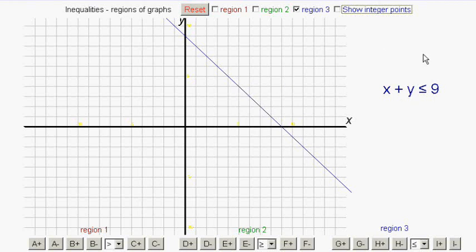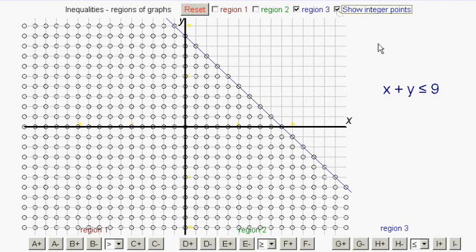I think the simplest one to choose is 0, 0. Now, 0 plus 0, that's very definitely less than 9. So 0, 0 is in the region. Now, if there's one point here, then they're all going to be there. And that's the region x plus y is less than or equal to 9.